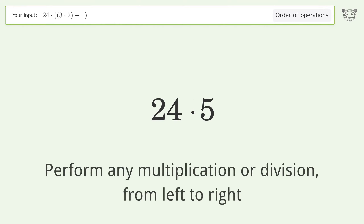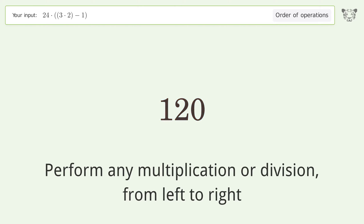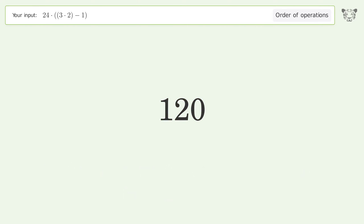Next, perform any multiplication or division from left to right: 24 times 5 equals 120. And so the final result is 120.